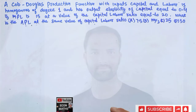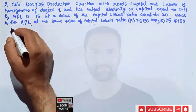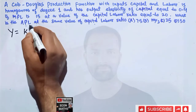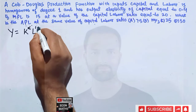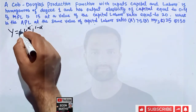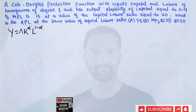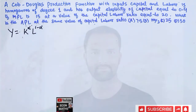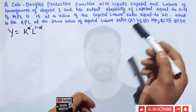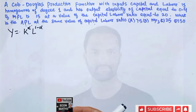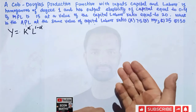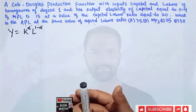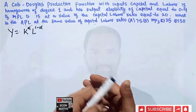Let us see how to solve this question. Our Cobb-Douglas production function is given as: Y = K^α × L^(1−α). We will not include total factor productivity since the question does not mention it. This function is homogeneous of degree 1, which simply means if inputs are doubled, output also gets doubled. If inputs are increased by a factor of 3, output will also increase by a factor of 3.